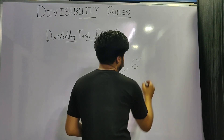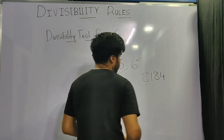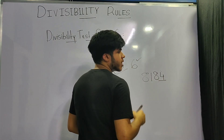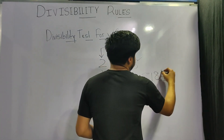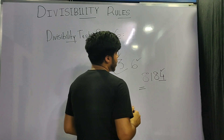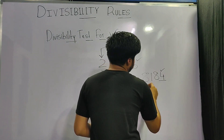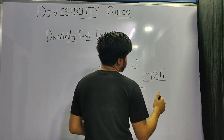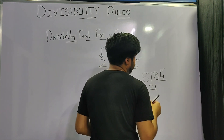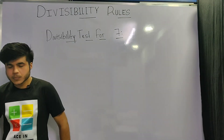Let's take another example for divisibility by 6. Suppose the number is 8184. It ends with 4, so it is divisible by 2. Its digit sum is 21, which is a multiple of 3, so the number is also divisible by 3. Since both conditions are satisfied, 8184 is divisible by 6.